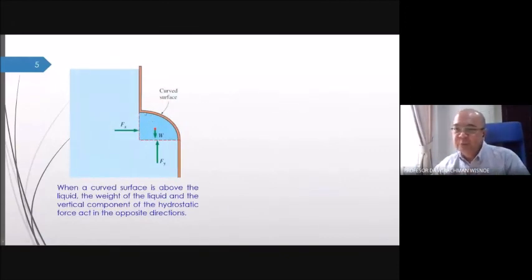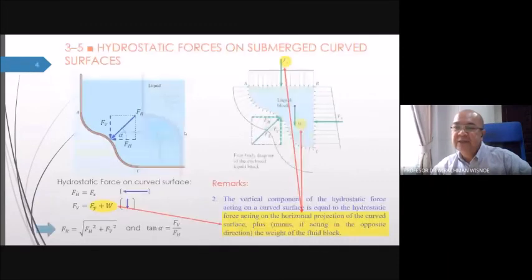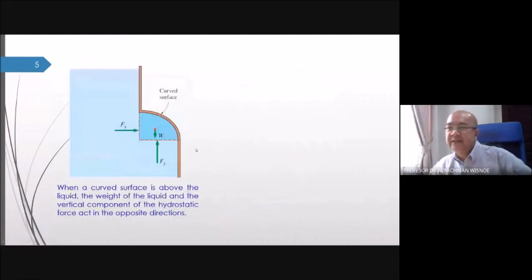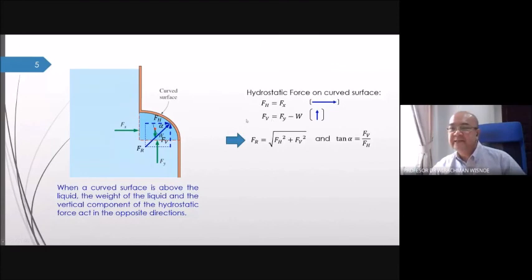When the water is on the left side instead of the right, it pushes the curved surface from below. In that case, Fy is directed upward and W is directed downward, giving Fv = Fy − W. So: if the fluid is above the structure, use Fy + W (positive); if the fluid is below the structure, use Fy − W (negative). Fh remains the same in both cases.